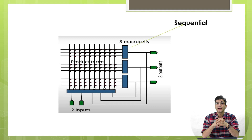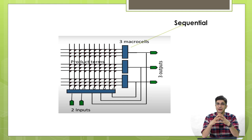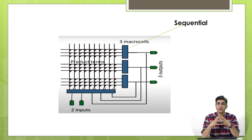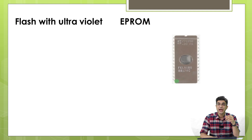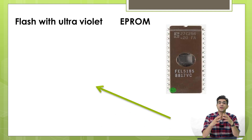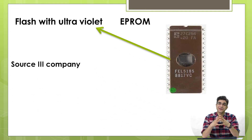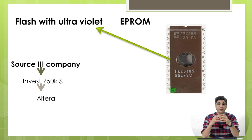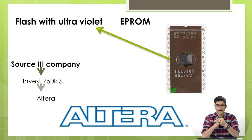Around this time, something very significant happened in the FPGA industry: EPROM arrived — memory that could be erased by ultraviolet light through a small window on the IC package, as you can see here. With ultraviolet light you could erase all the data. This was very beneficial for FPGA.